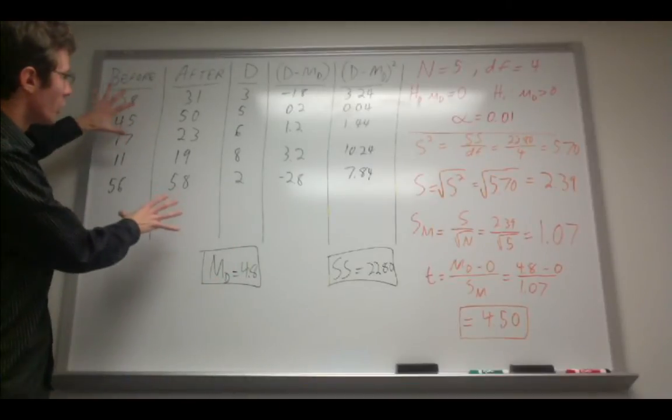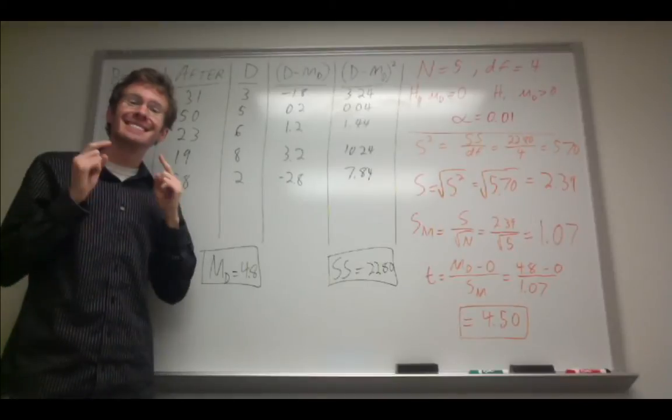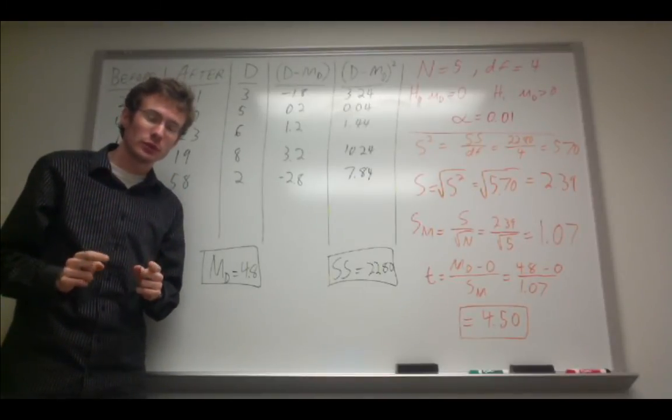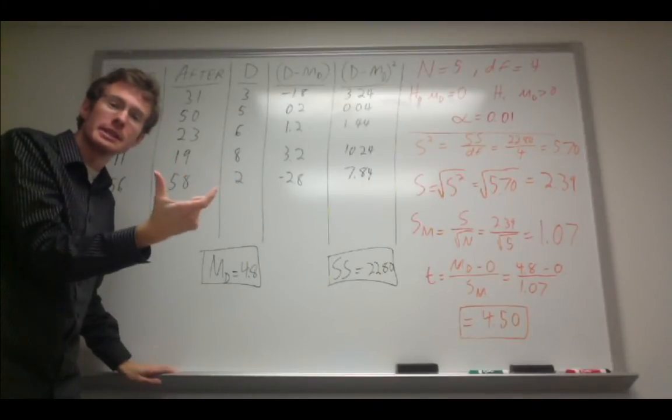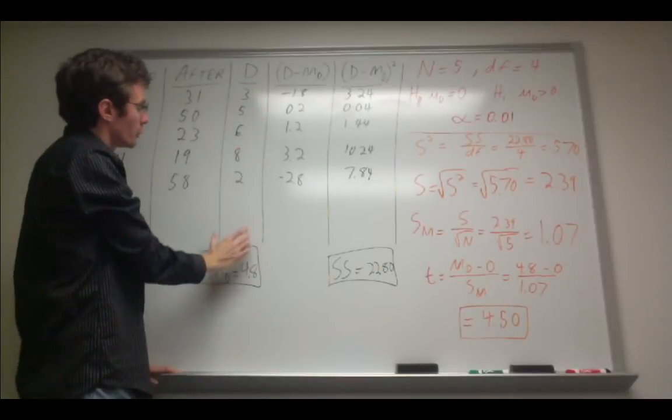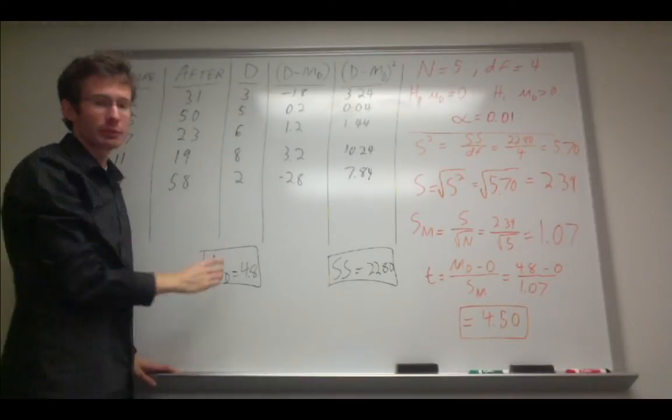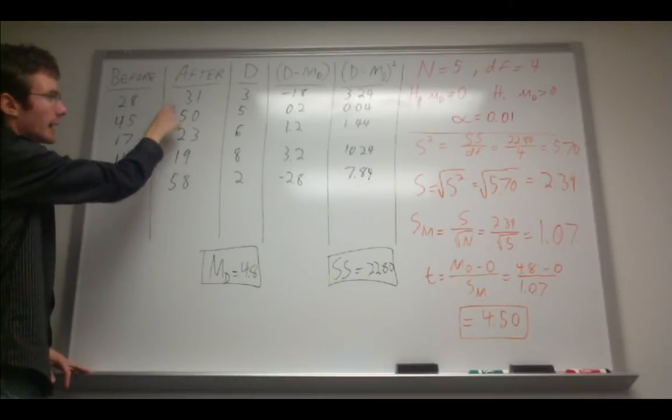So we have all of our numbers, and with this type of t-test what we're interested in is the difference for each individual. So for each individual we have their score before and after, and we take the difference between those two scores. So we have a third column right here called D for difference, and we simply take the difference from before and after.